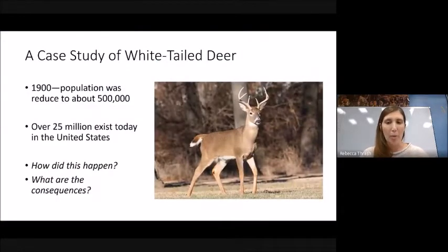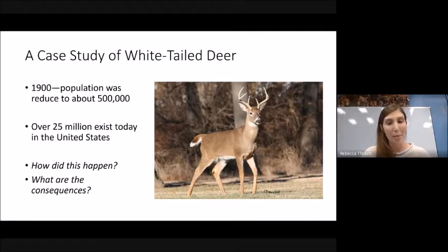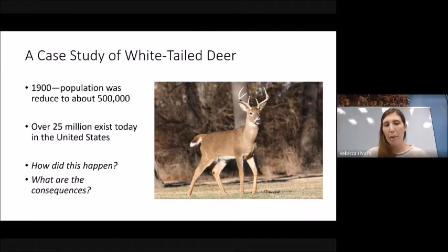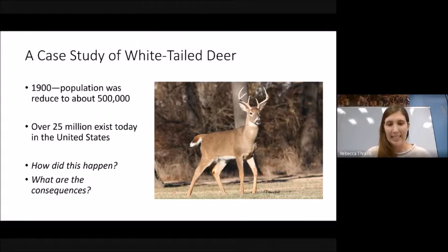Before we get started talking about populations and how they are regulated, let's talk about a case study: the white-tailed deer population in the United States. These are the deer you can see on the edge of forests or in suburban neighborhoods. In 1900, the population was reduced to only about 500,000 individuals because of extreme overhunting. After a while, the United States passed laws to regulate hunting, and today we have over 25 million.